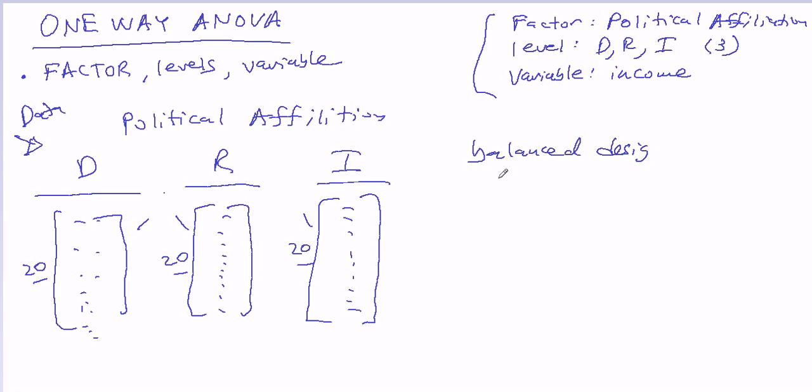So we'll try to use balanced designs. So unbalanced would mean that, let's say, one of these groups had 30. All of a sudden, now these are not balanced.